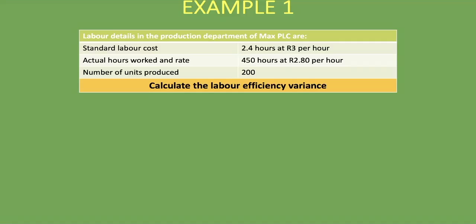Now let's go into the examples. Here's Example 1: the labor details in the production department of Max PLC are — Standard labor cost: 2.4 hours at 3 rand per hour. Actual hours worked and rate: 450 hours at 2.80 per hour. Number of units produced: 200. Note this is the same data used in the labor rate variance lesson.